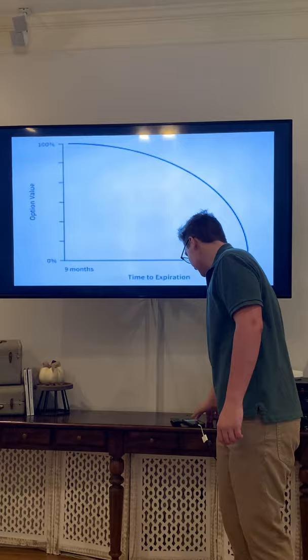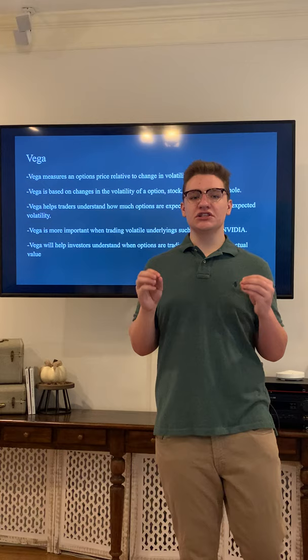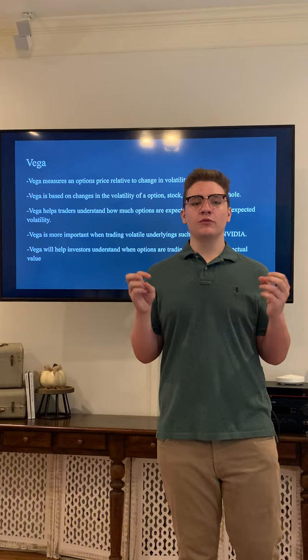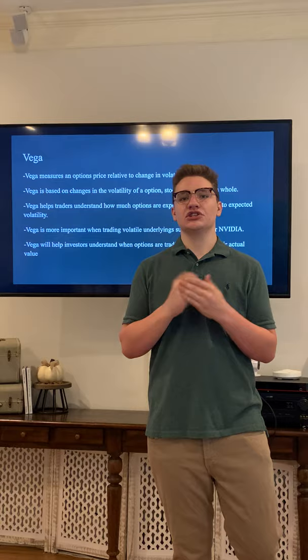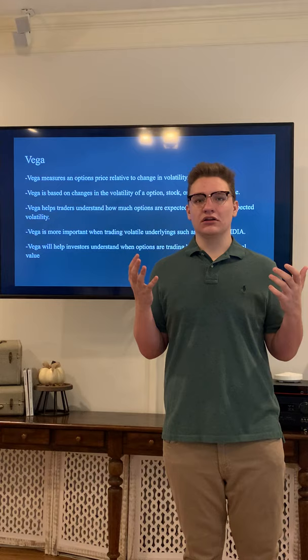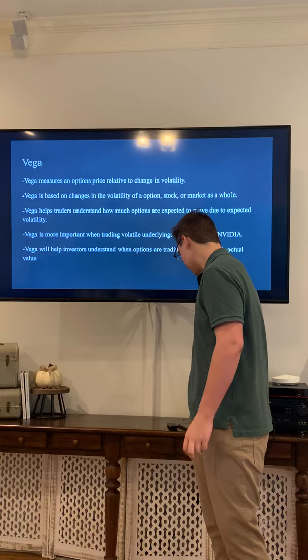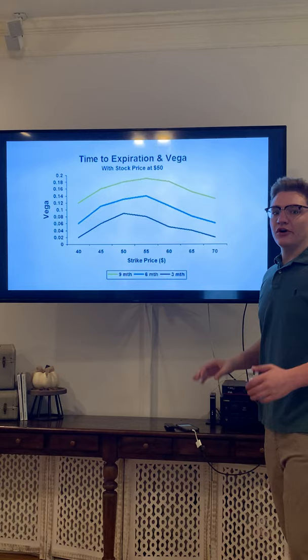The next option Greek is vega. Vega measures an option's price relative to changes in volatility — based on changes in the volatility of the option, stock, or market as a whole. Vega helps traders understand how much options are expected to move directionally. It's especially important when trading extremely volatile underlyings such as Tesla or Nvidia. Vega will help investors realize when they are overpaying for options. The vega is higher on the nine-month contract because there is more unknown volatility in the long term.